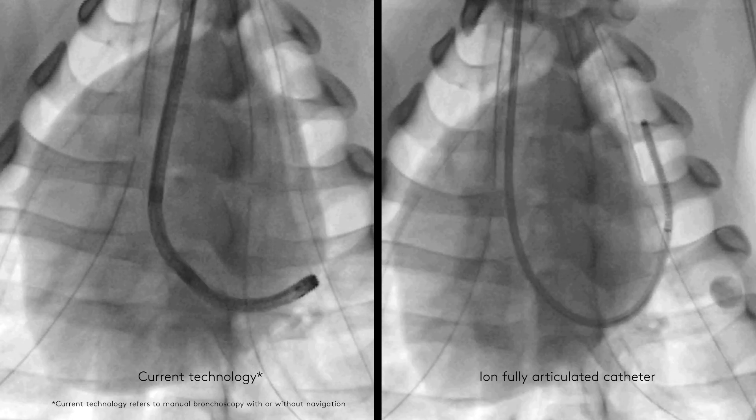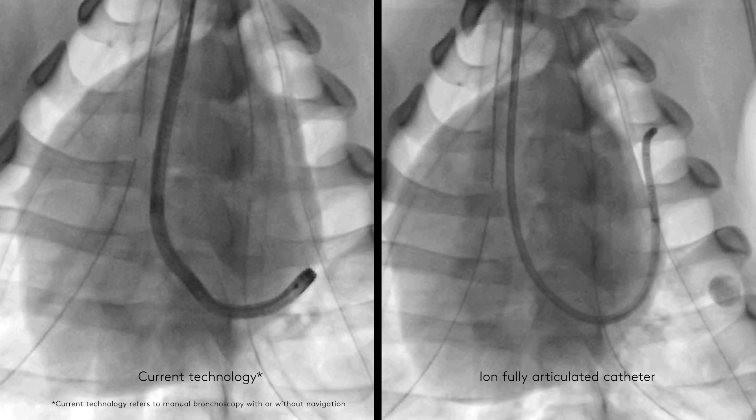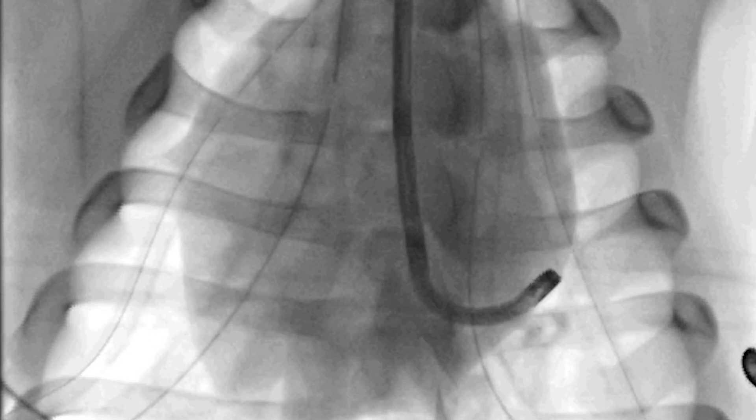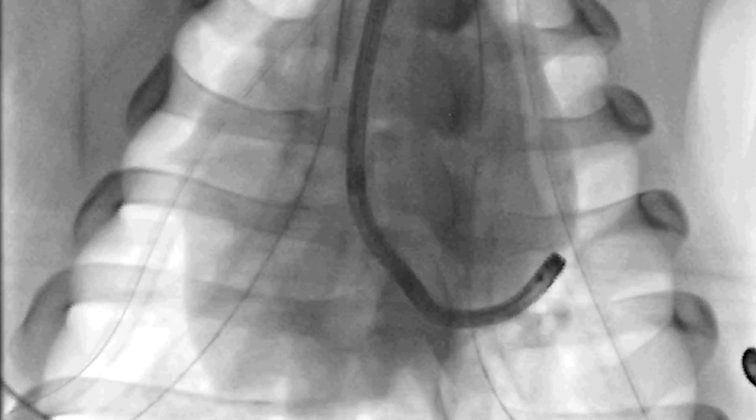The outer diameter of bronchoscopes are often too large to reach difficult-to-access segments of the lung. In addition, it does not provide the articulation required to navigate through tortuous airways.